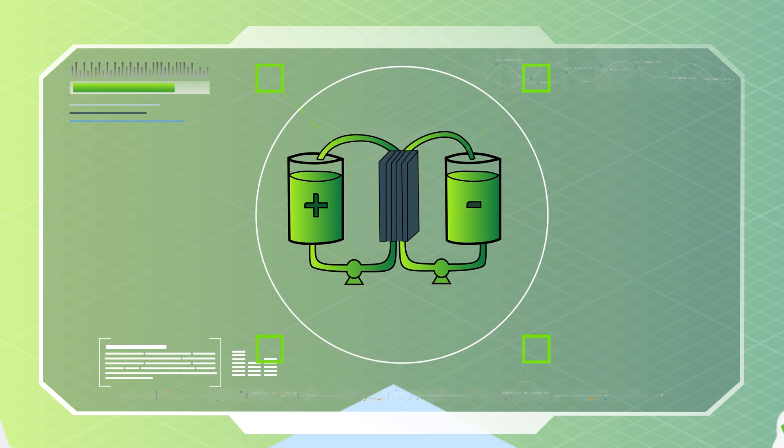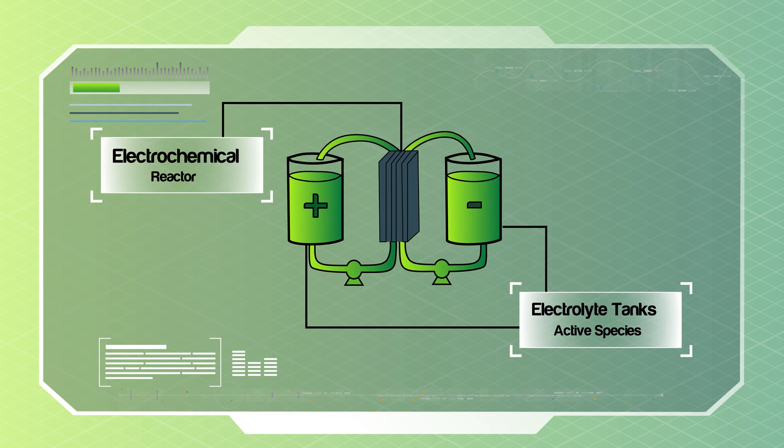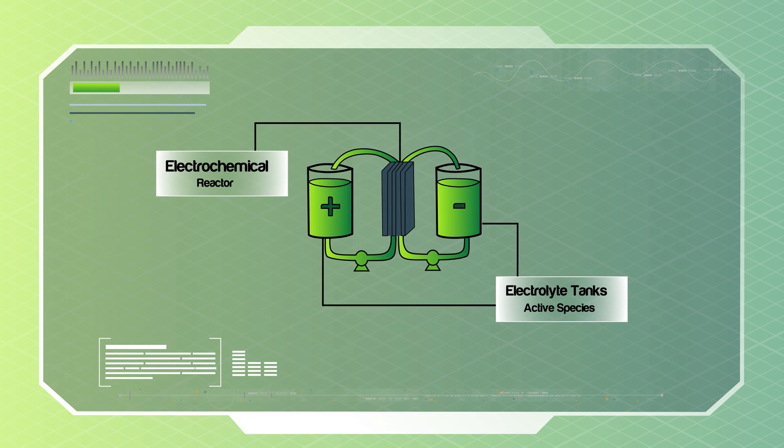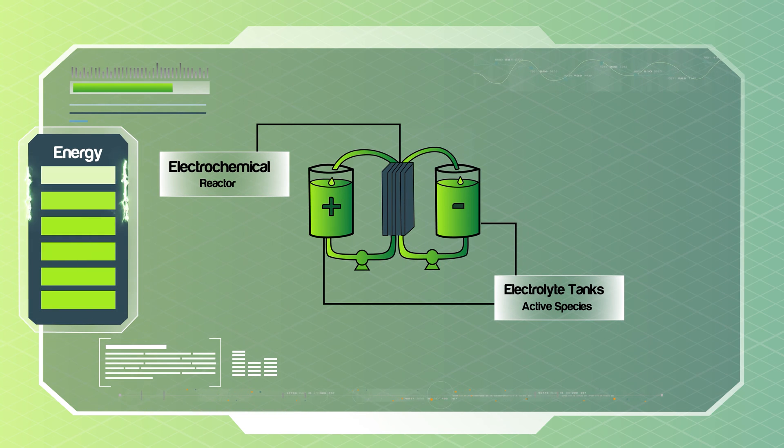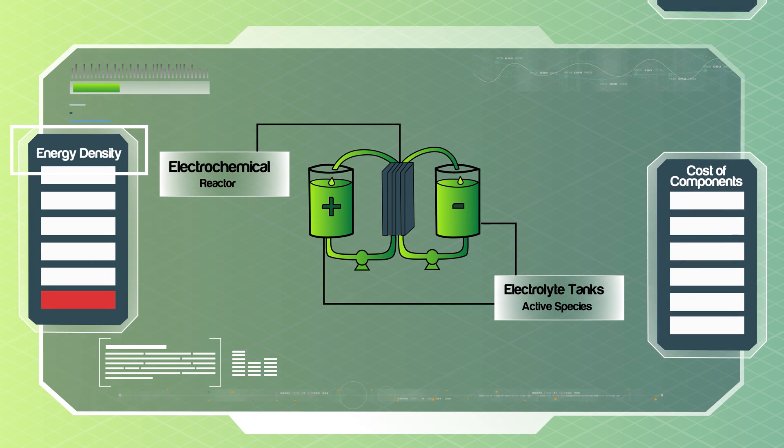This type of battery separates the energy conversion and energy storage reactors, allowing for independent scaling of energy and power. Despite several advantages, current redox flow batteries face limitations like low energy density and expensive components.